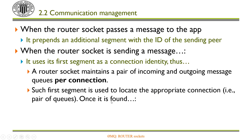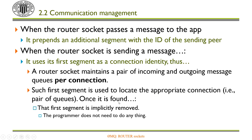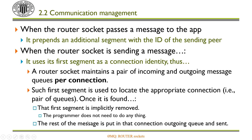Once that connection is found, that first segment is dropped — but the programmer doesn't need to do anything related to this; it is done automatically. The rest of the message, that is, the other segments in the message, are put in that connection's outgoing queue and eventually they will be sent.